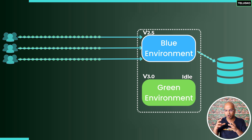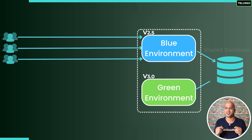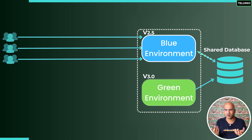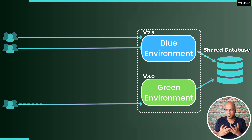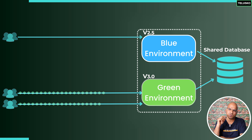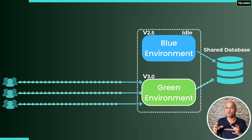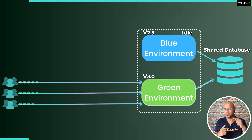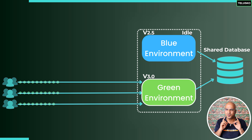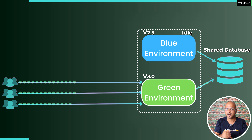You gradually move users from the blue instance to the green instance. You don't move everyone at once — if something goes wrong, at least fewer users are affected. Once everyone has been moved to the green instance, the blue instance goes to idle state. You don't have to destroy it, because in blue-green deployment you do need two instances running.